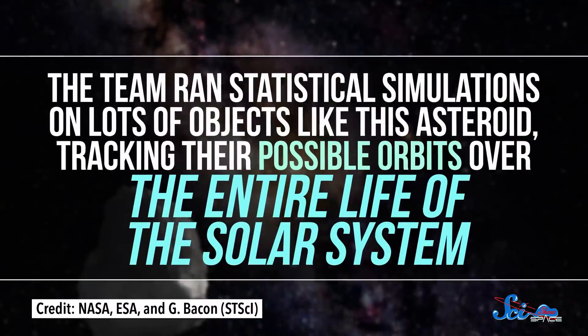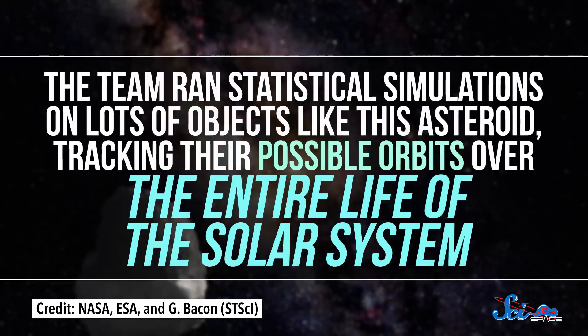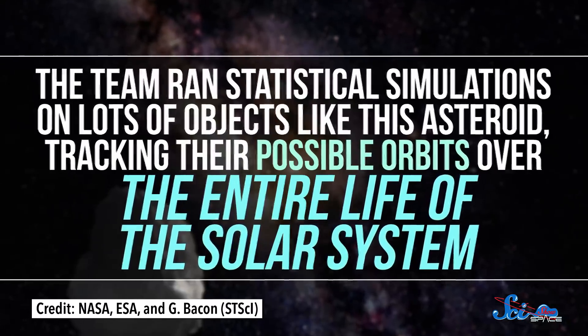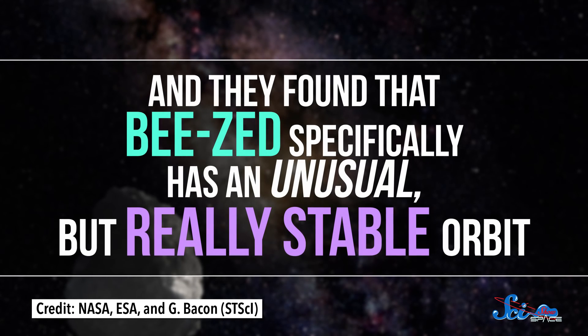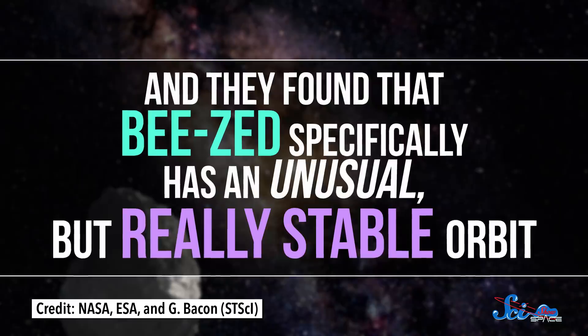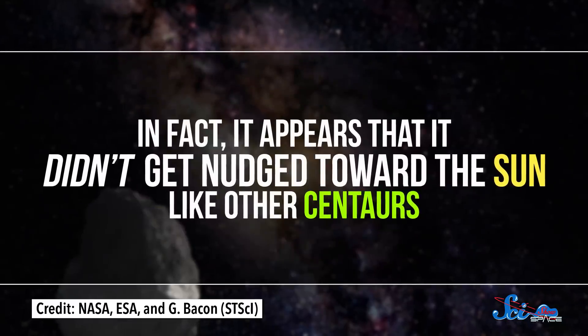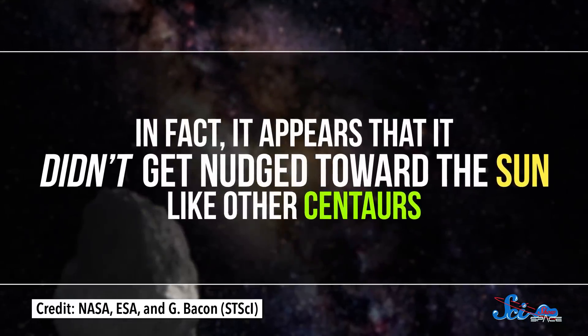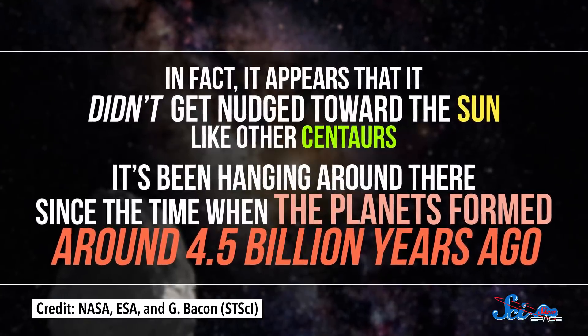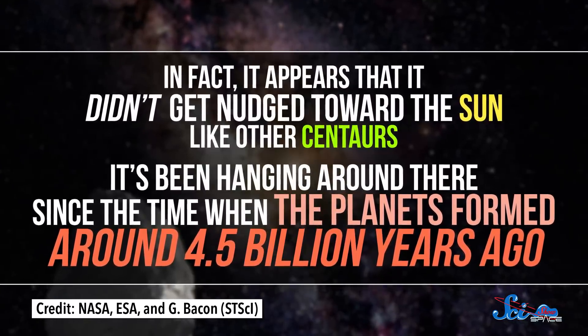The team ran statistical simulations on lots of objects like this asteroid, tracking their possible orbits over the entire life of the solar system. And they found that BZ specifically has an unusual but really stable orbit. In fact, it appears that it didn't get nudged toward the Sun like other centaurs. It's been hanging around there since the time when the planets formed around 4.5 billion years ago.